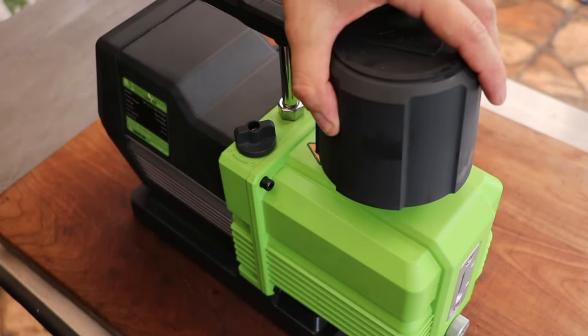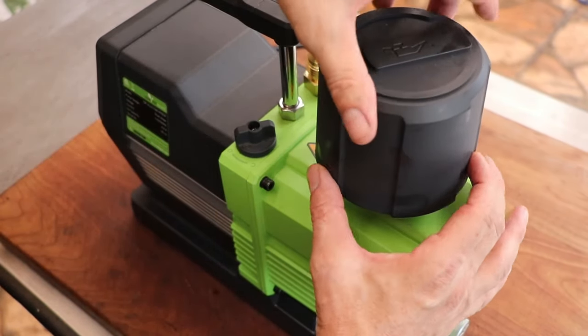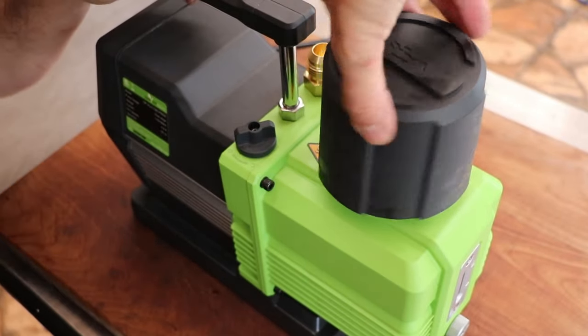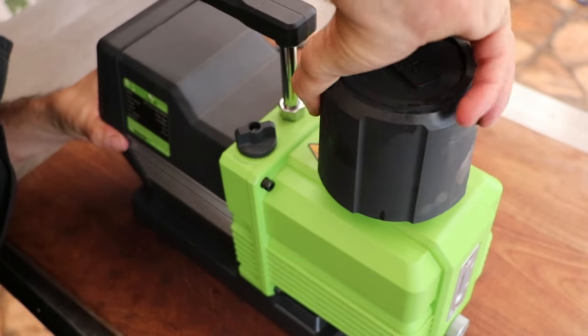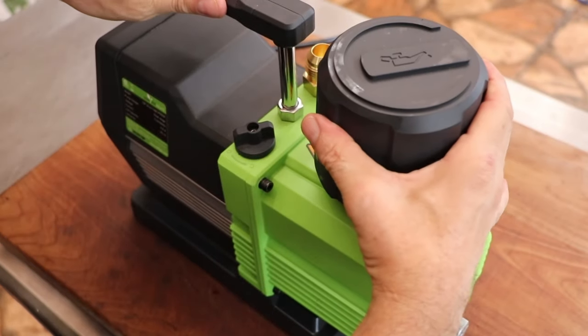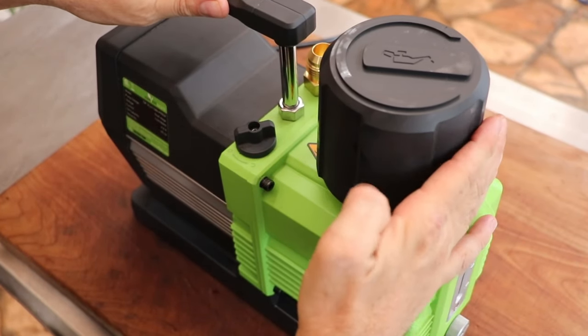When screwing the demister back onto the pump, it should screw in effortlessly. So you're not going to need to force it. Just make sure that the threads are lined up. And then once you get it going, you can go ahead and hand tighten it. No need to over-tighten it. And there we go. Beautiful.